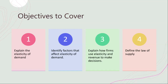Whether a product is a necessity or a luxury also plays a role. Necessities tend to have inelastic demand because people need them regardless of price, such as water, whereas luxuries often have more elastic demand, such as expensive watches or brand-name clothing. Third, there's the time horizon — demand can become more elastic over the long term, as consumers have more time to adjust their behavior and their preferences and purchasing power are constantly changing.